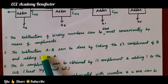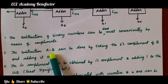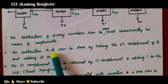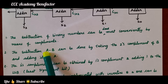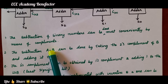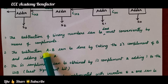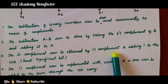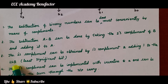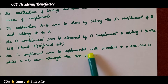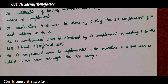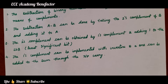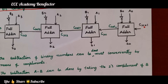The subtraction of two numbers, that is A minus B, can be done by taking 2's complement of B and adding it to A. When you are doing 2's complement of A minus B, we take 2's complement of B and add it to A. The 2's complement can be obtained by 1's complement of B and then adding 1 to the LSB of the 1's complement of B. The 1's complement can be implemented with an inverter — changing 1 to 0, 0 to 1 — using inverters, and add 1 to the least significant bit. I hope the 2's complement subtraction is clear.